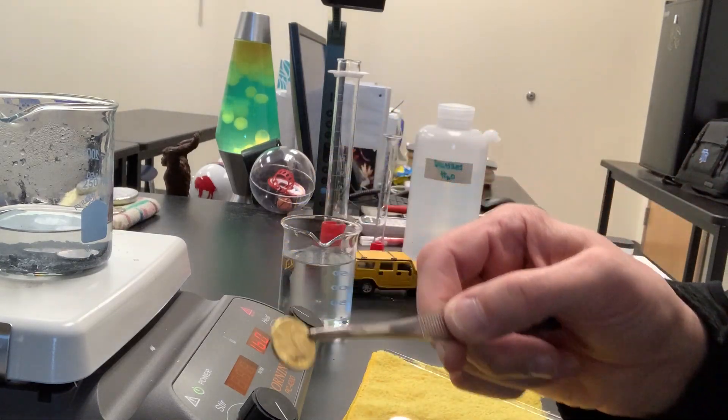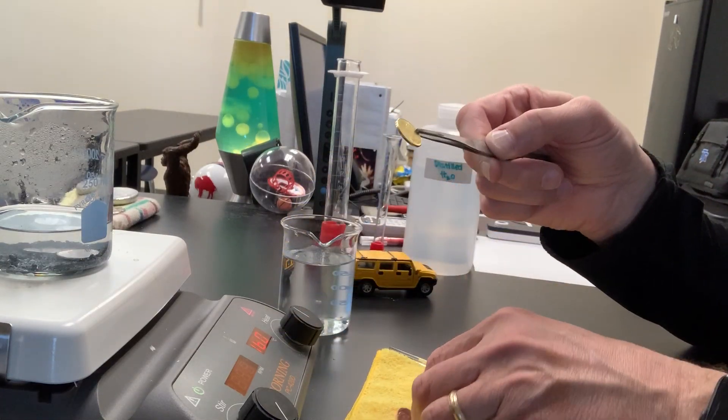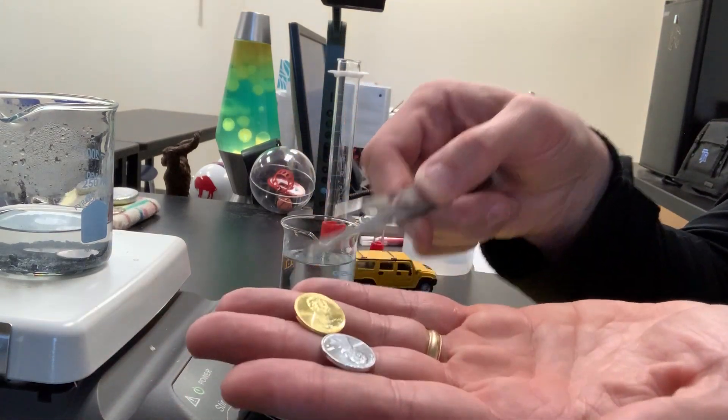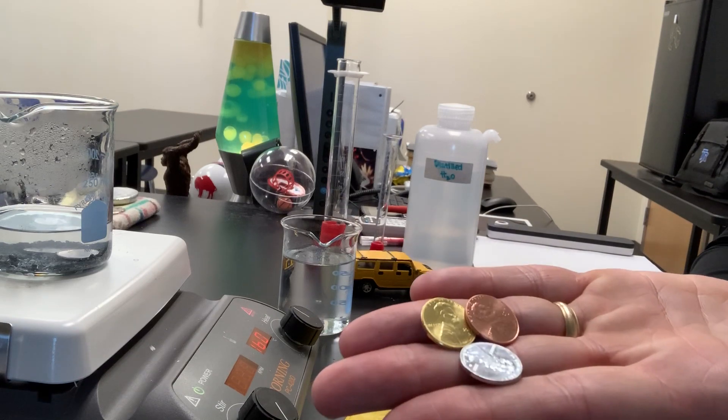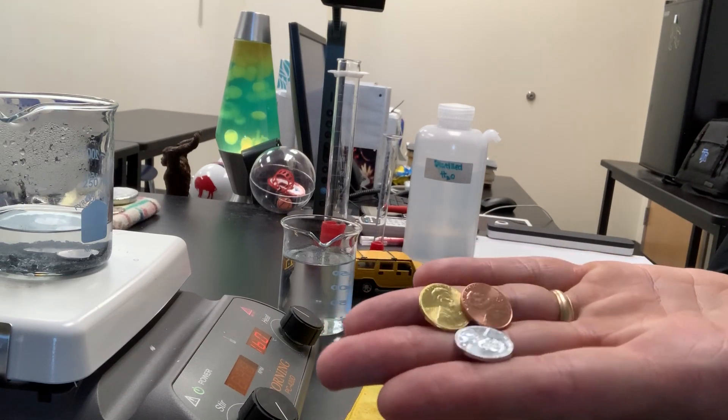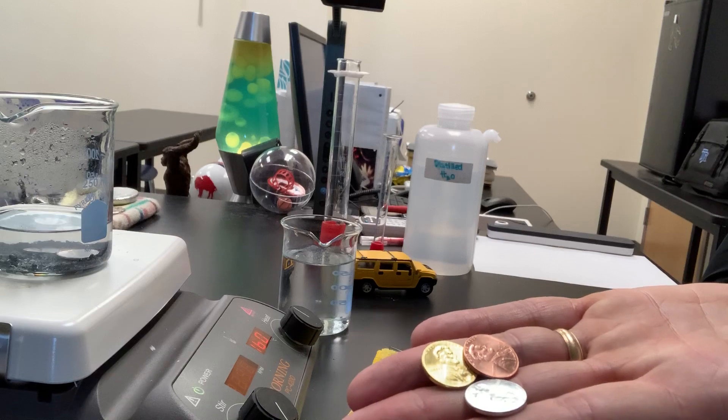When I compare that to the zinc penny from just a moment ago and the copper penny from earlier, we have three pennies: one that's copper on top, one that's brass, and one that has a coating of zinc.